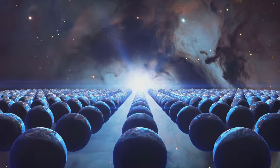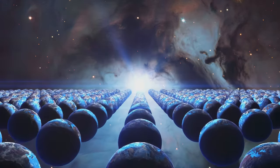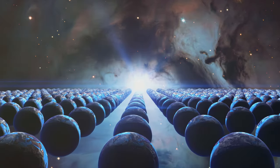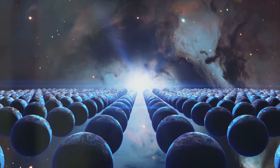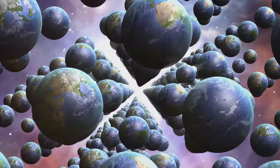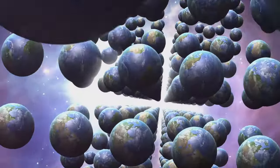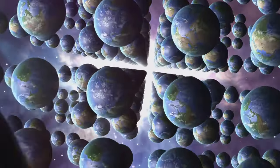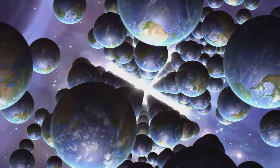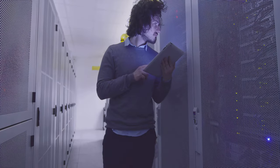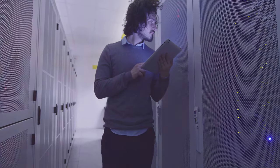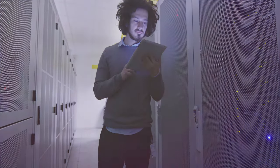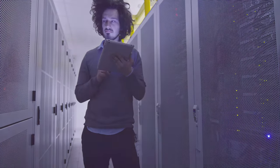Enter Hugh Everett's many worlds interpretation. Everett proposed that the wave function never actually collapses. Instead, every possible outcome of a quantum event happens in its own separate universe. It's as if the universe makes a copy of itself for each possible outcome, resulting in an infinite number of parallel universes, each representing a different data output. This is a radical departure from traditional interpretations of quantum mechanics, but it provides a robust framework for understanding our universe as a data processor.